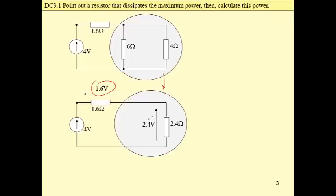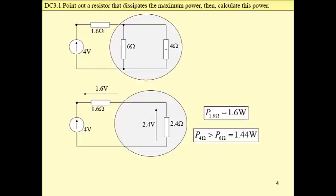We may calculate these two voltages and then we may find power which is dissipated by 1.6 ohm and power which is dissipated by 4 ohm because we have to check these two resistors.